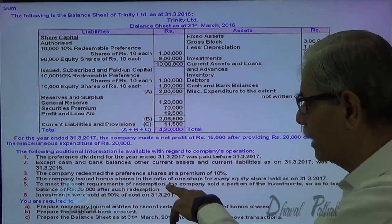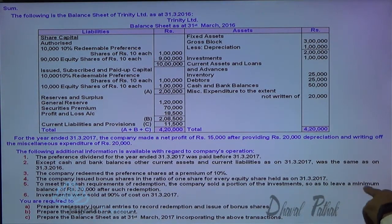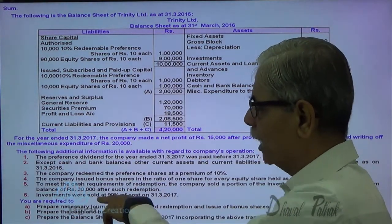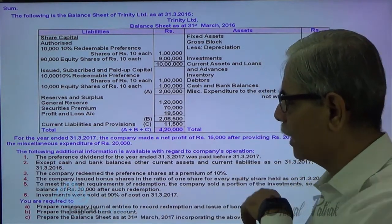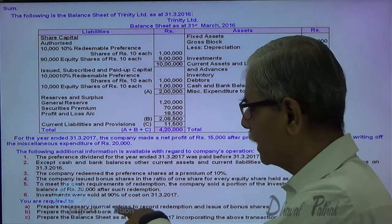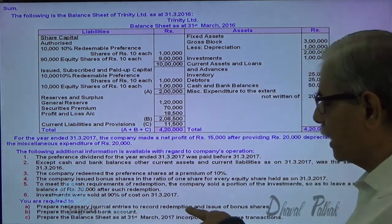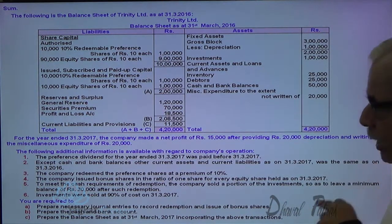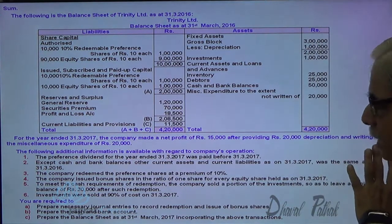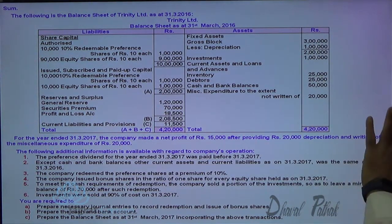To meet the cash requirements for redemption, the company sold a portion of investments so as to leave a minimum balance of 30,000 after such redemption. Investments were sold for 90% of cost on 31st of March 2017. You are required to prepare necessary journal entries to record the redemption and issue of bonus shares, prepare the cash and bank account, and prepare the balance sheet as on 31st of March incorporating the above transactions.